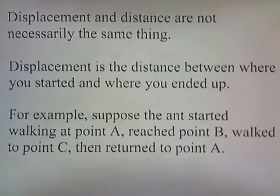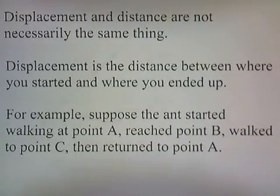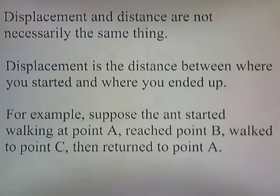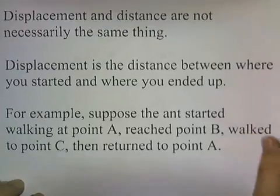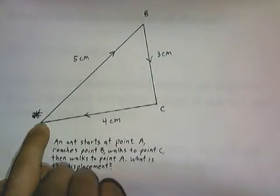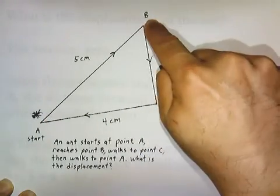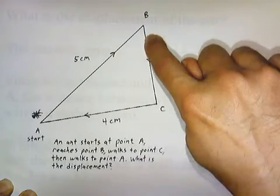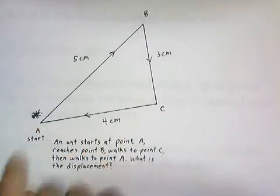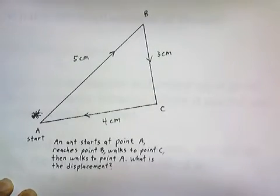Displacement and distance are not necessarily the same thing. Displacement is the distance between where you started and where you ended up. Suppose the ant started walking at point A, reached point B, walked to point C, then returned to point A. The ant starts at point A, walks to point B which is 5cm away, then turns and walks to point C which is 3cm away, and then returns back to point A which is 4cm away.